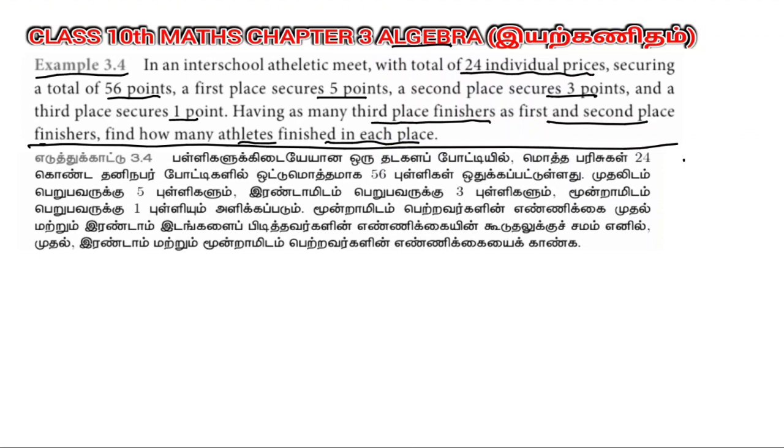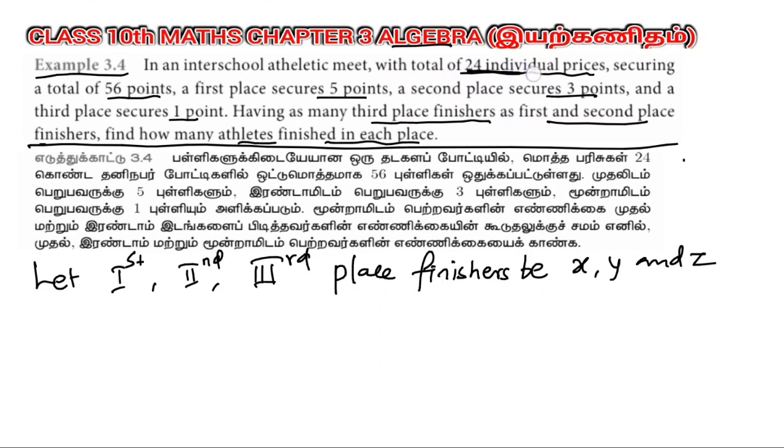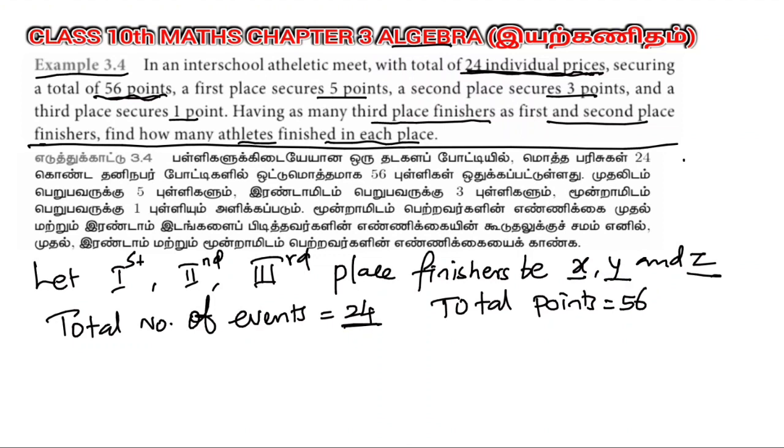Let first, second, and third place finishers be x, y, and z. Total number of events equals 24. Total number of points is 56. First place, second place, and third place all add to 24. So as per the problem, x plus y plus z equals 24. This is equation 1.